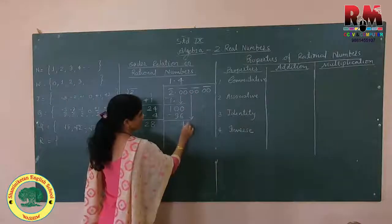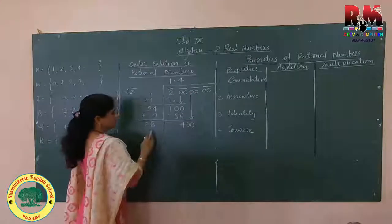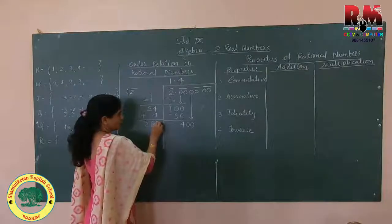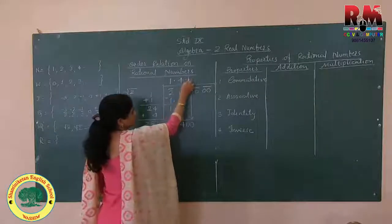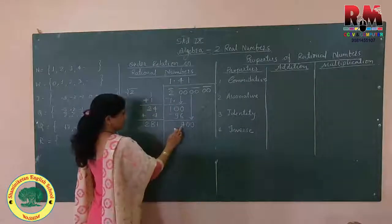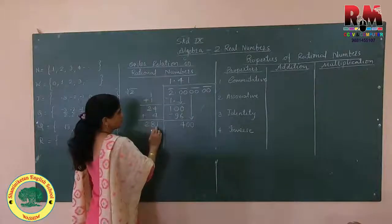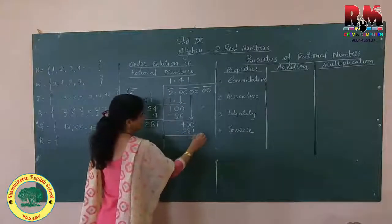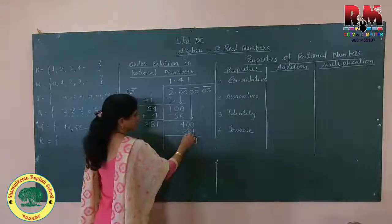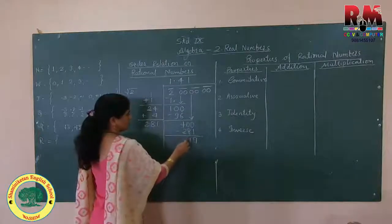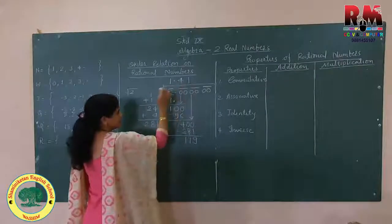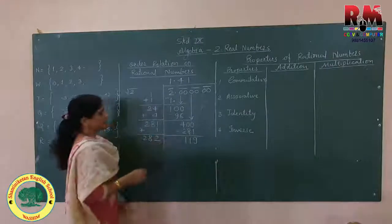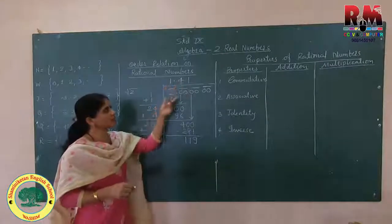Again, bring down two zeros. Choose a number such that its multiplication can be subtracted from the number here. 281 multiplied by 1 is 281. Subtract here — remainder is obtained. Add that number again. By this method, you can find the square root of any number.